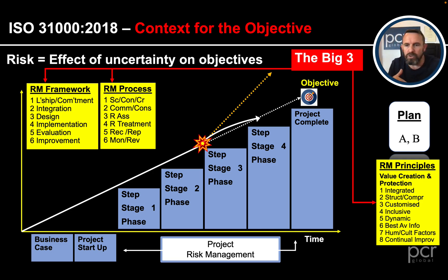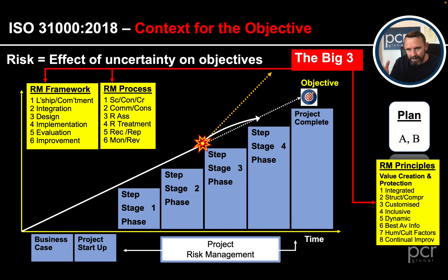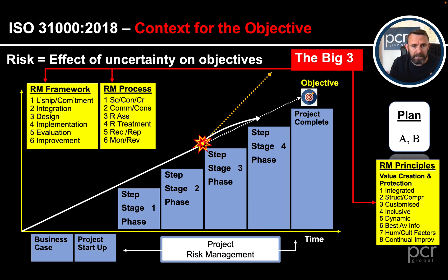Moving to the risk management framework — that is what we would have designed and built surrounding our project and organization. The risk management framework has six areas with leadership and commitment in the middle. When building the framework we want to integrate it across the organization. When designing it we look at things like: do we undertake projects? What are our operations? What are the strategic objectives? How are functions set up internally? We design the framework around the significant activities and decision making within the organization. Once implemented, we evaluate how well it's doing — similar to PDCA — and again, improvement is key.